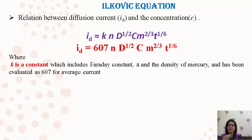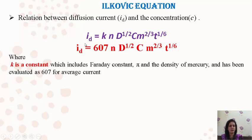During this measurement we use the Ilkovic equation, which gives the relation between diffusion current and concentration. The Ilkovic equation is: Id = K · D^(1/2) · C · M^(2/3) · T^(1/6). Try to memorize this equation. This single equation is useful to find out the concentration of the metal ion under study if we know all the parameters. Id is the diffusion current, which we can get from the polarogram. K is a constant.